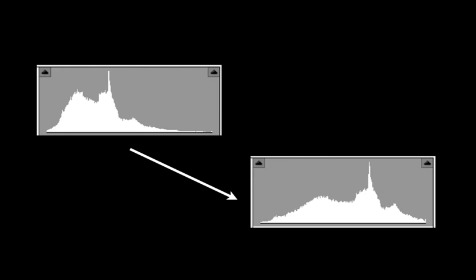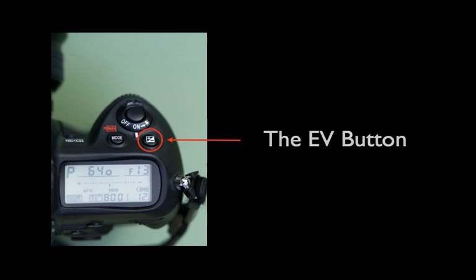If you're shooting in program, aperture priority, or shutter priority modes in your camera, a very easy way to make this shift in exposure is with the EV button.